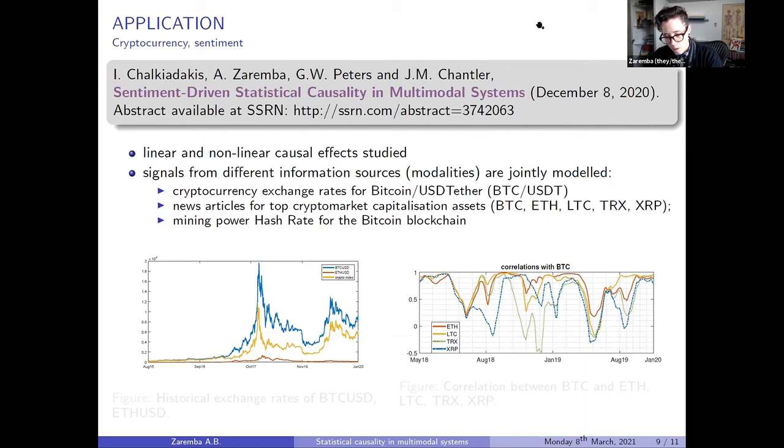And the abstract at the moment is available at SSRN. The title is Sentiment-Driven Statistical Causality Multimodal System. We're looking at linear and non-linear causal effects. And we're looking at three modalities. Cryptocurrency exchange rates. The sentiment index, which is based on news articles for Bitcoin, Ethereum, Litecoin, Tron and Ripple. And also Hashrate, which is a mining power for Bitcoin blockchain.